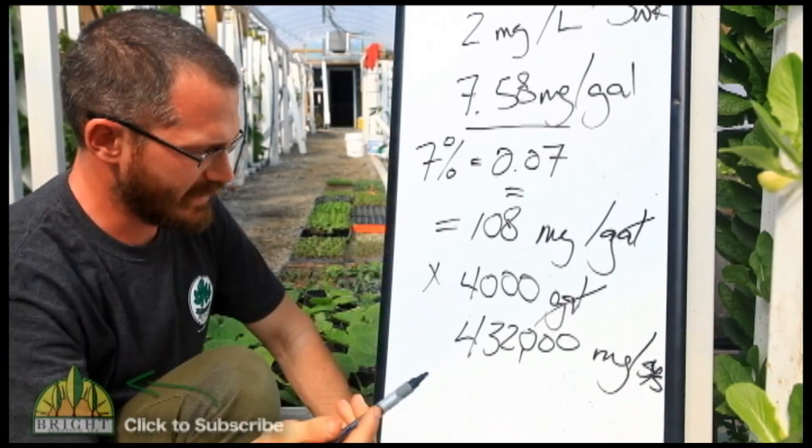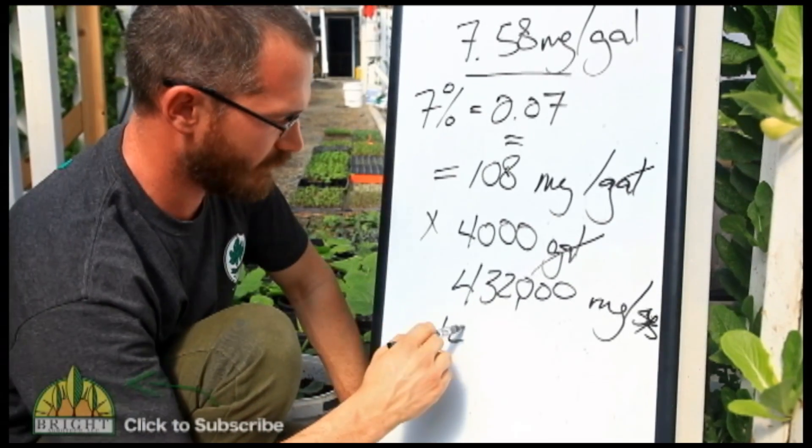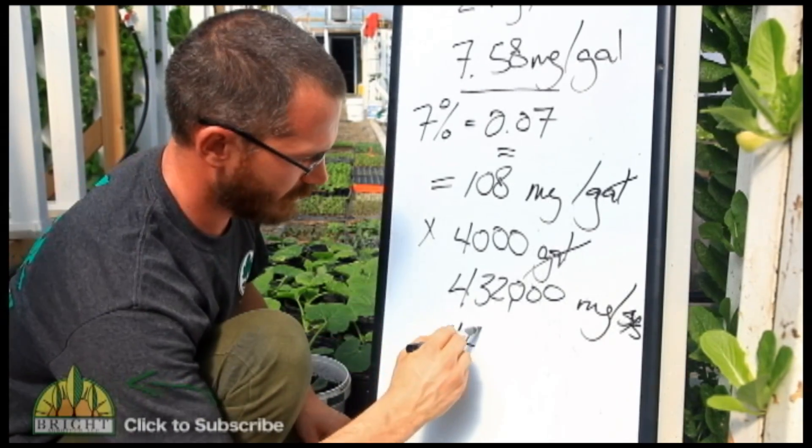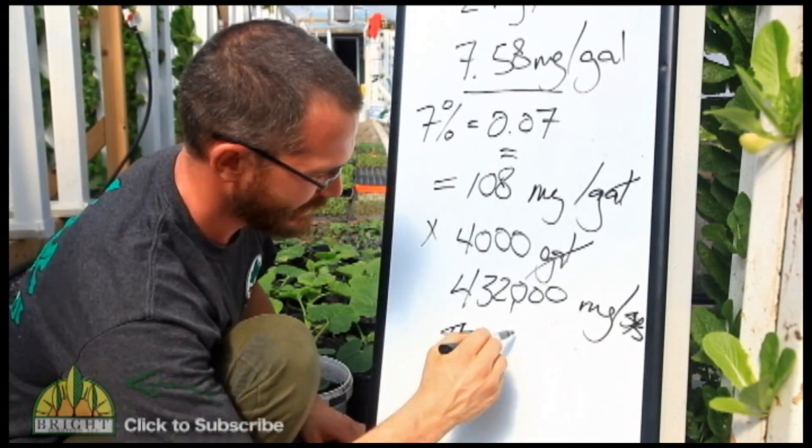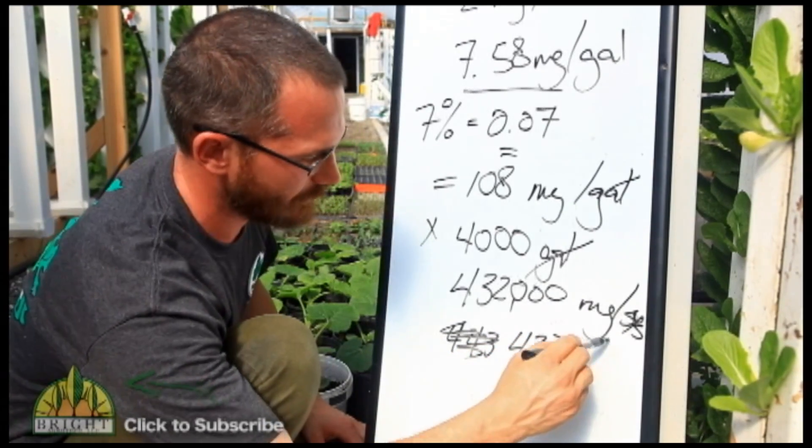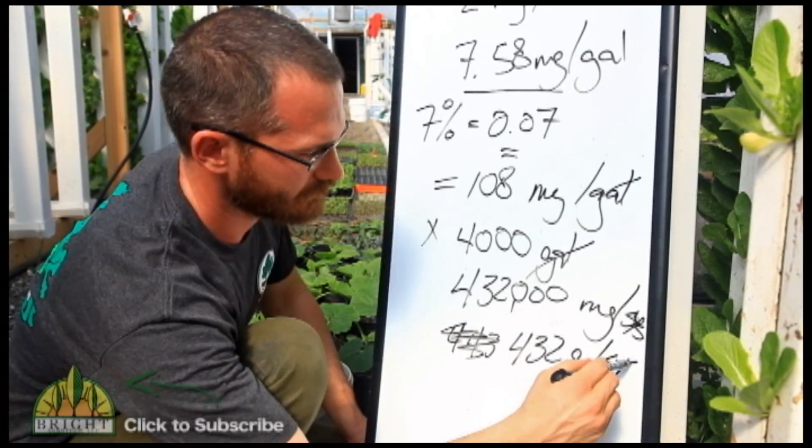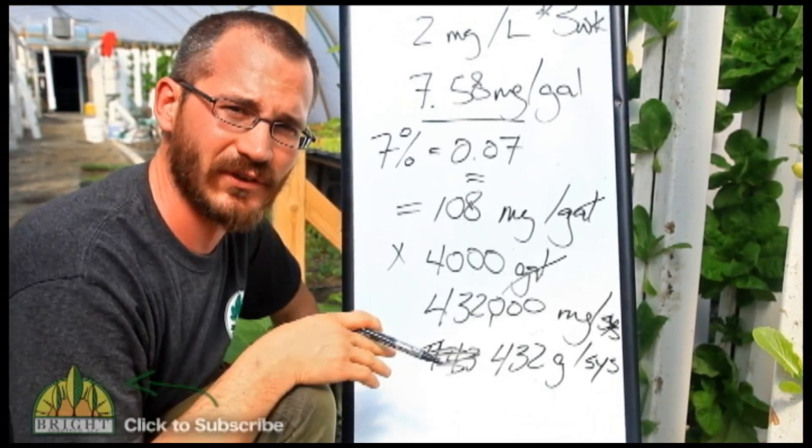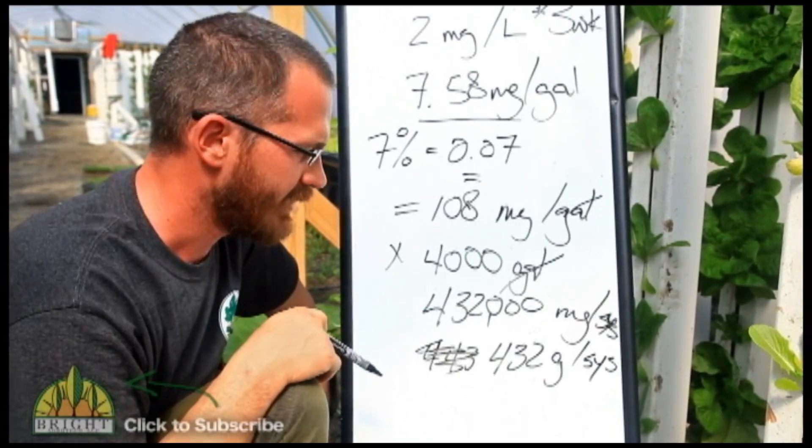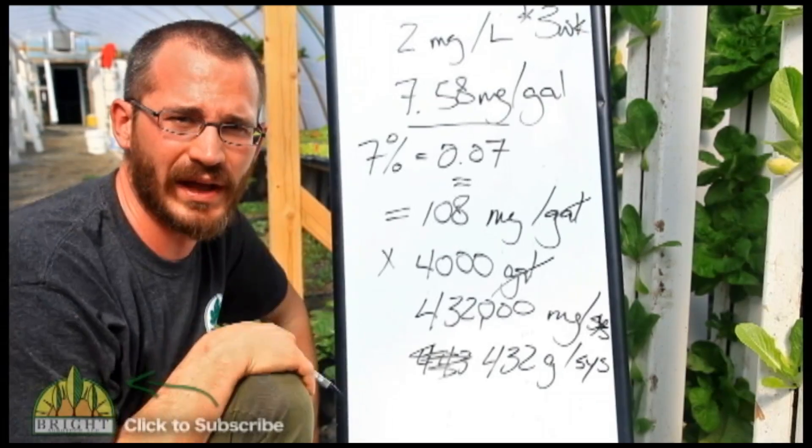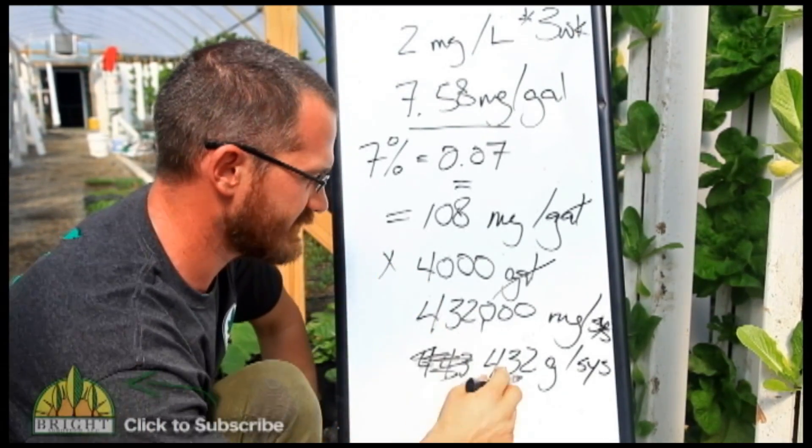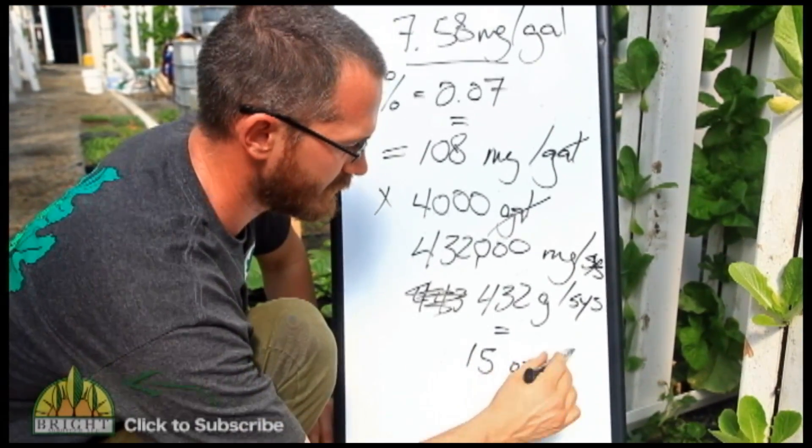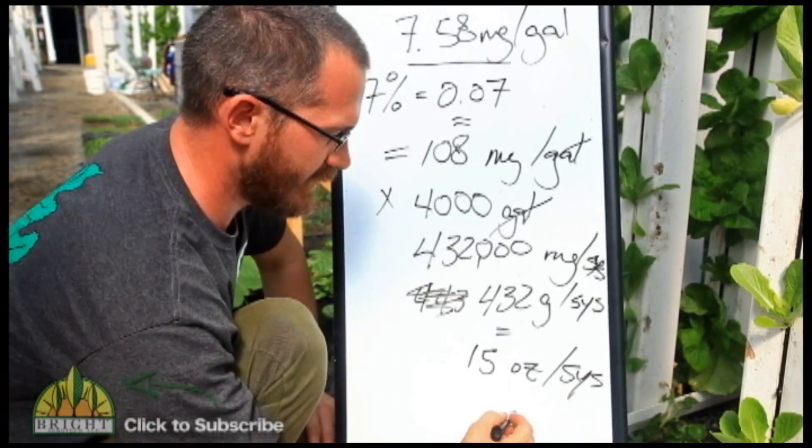So if you know your metric, that's 432 grams in the whole system. All right, so if you have a little scale that will measure in grams, great. If you don't, again, if you're here in the U.S., you basically just convert your grams to ounces, and for us, for 4,000 gallons, 432 grams is about the equivalent of roughly 15 ounces in the system every three weeks.